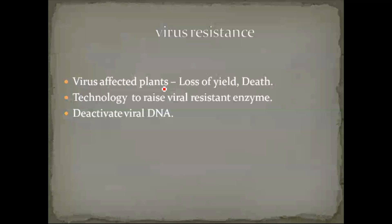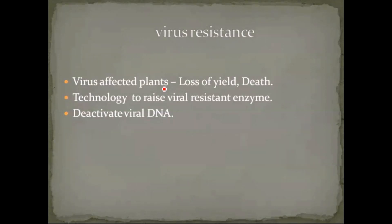By using RDNA technology, it can cause natural resistance in the plant. Suppose if the virus starts to affect the plant, it won't cause any diseases to the plant. So for that, they are developing viral resistant plants in crop items. Mostly tobacco plants were developed because cotton is a cash crop, and to give resistant power against the virus, they are developing virus resistant plants.